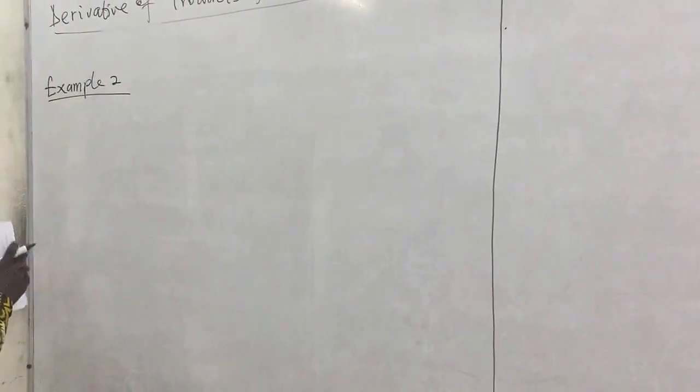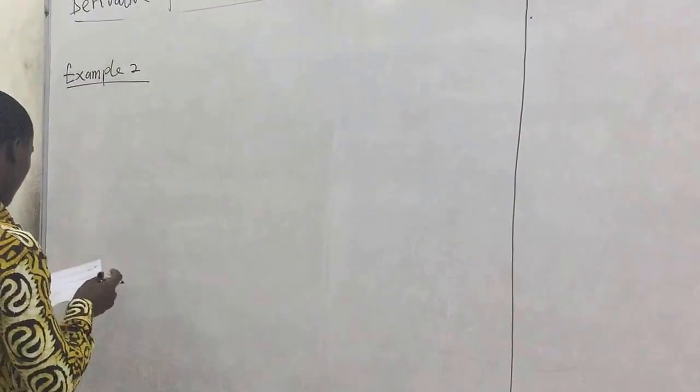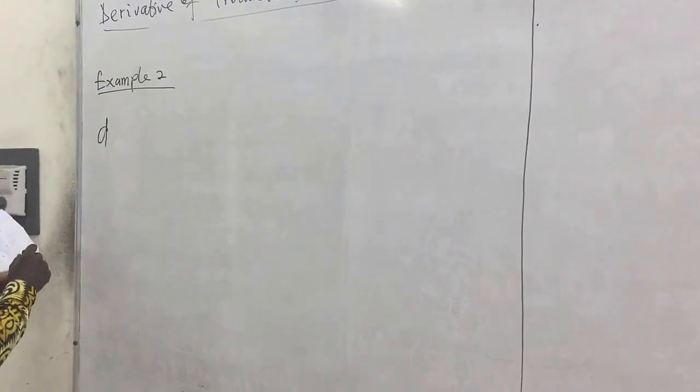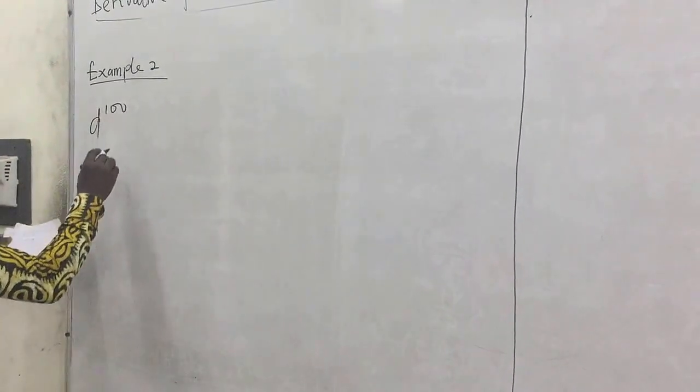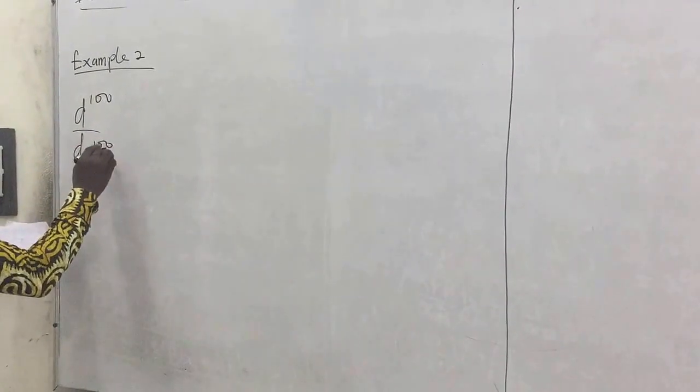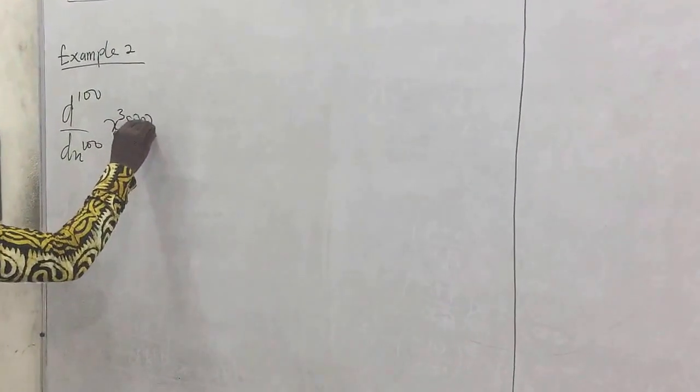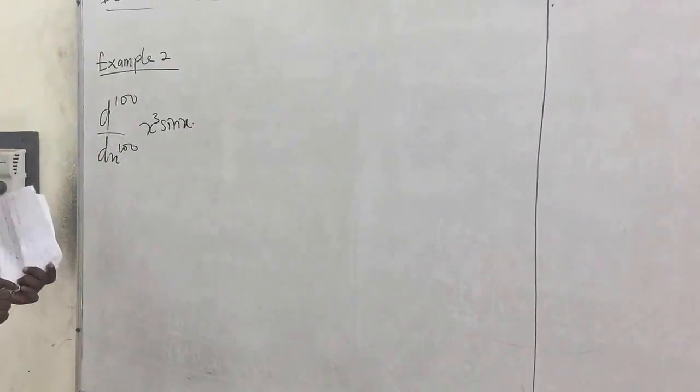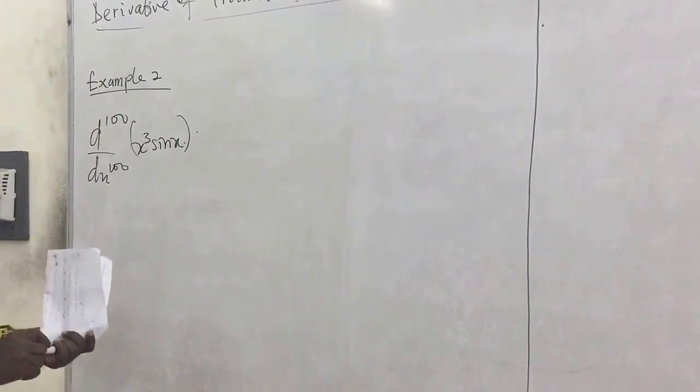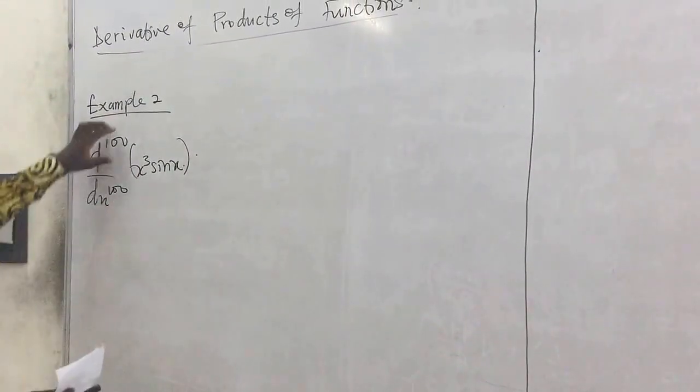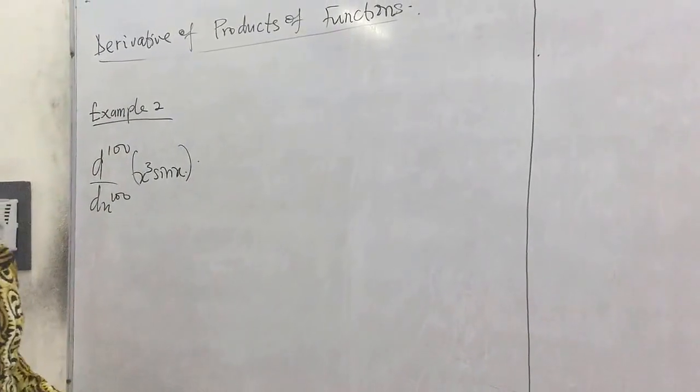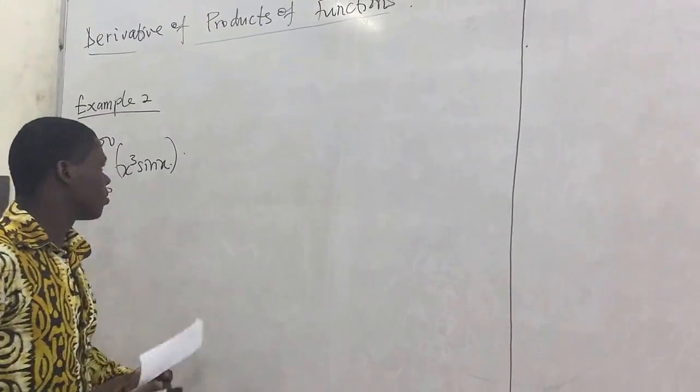So we want to find the 100th derivative of x cubed sin x. So how can I be differentiating 100 times? It's not a big deal.